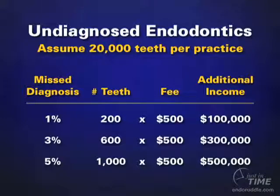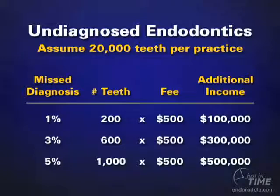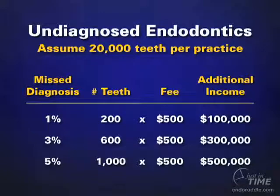If you talk to endodontists, they'll tell you that the misdiagnosis rate out of the general dentist office is probably much closer to 15% — a staggering number. But if you just look at 5%, what's 5% of 20,000 teeth? If you do the math, there are 1,000 teeth that have not been diagnosed endodontically that could have been, if you had done the clinical findings, the vital pulp test, and the radiographic examination.